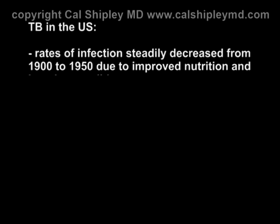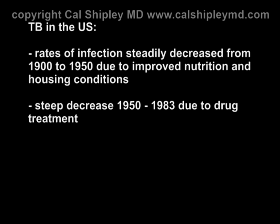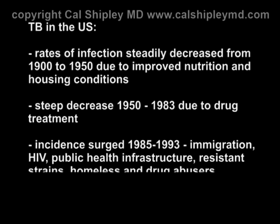In the United States, incidence of tuberculosis infection steadily decreased from 1900 to 1950 due to improved nutrition and housing conditions, followed by another steep decrease in incidence between 1950 and 1983 due to the advent of successful drug treatment for the infection. This was followed by a sharp increase in the number of individuals infected with TB between the years of 1985 and 1993.